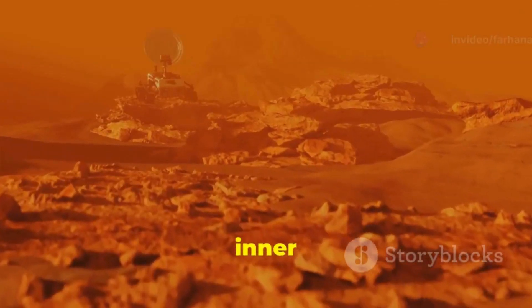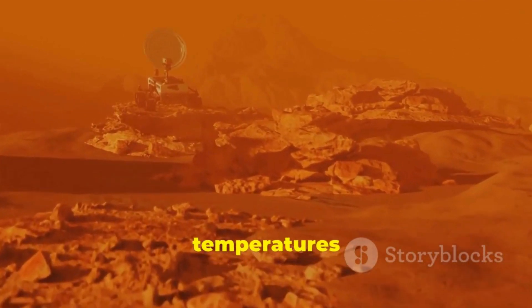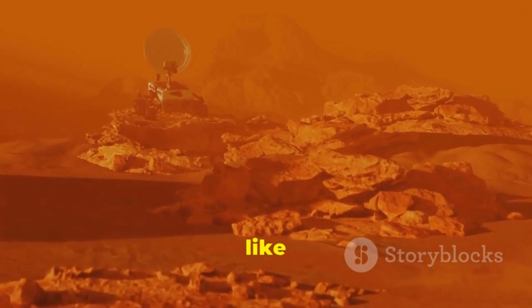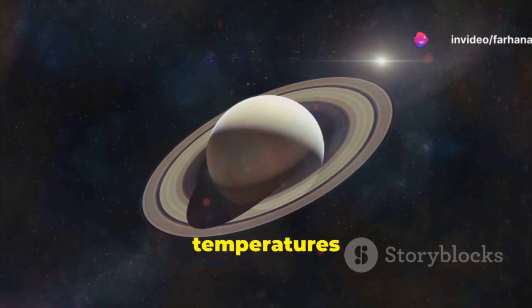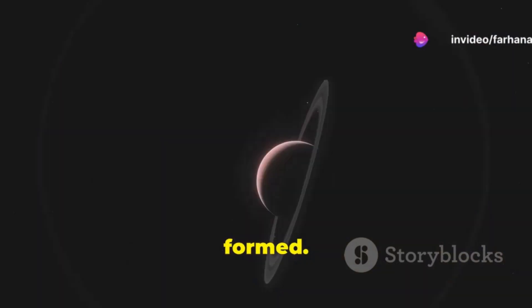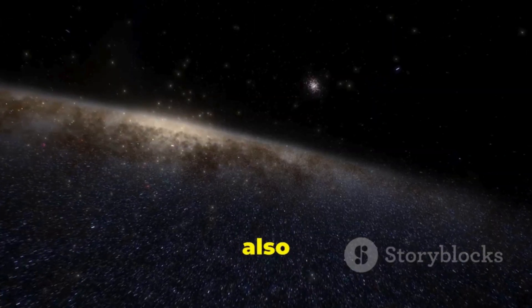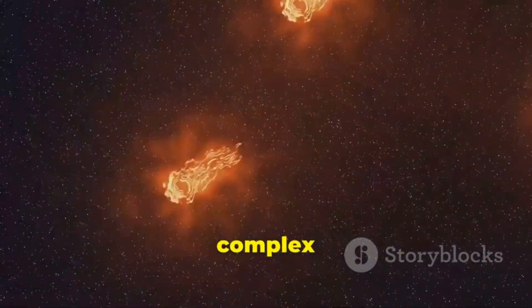They continue to collide and grow, eventually becoming planets. In the inner solar system, where temperatures are higher, rocky planets like Earth and Mars formed. In the outer solar system, where temperatures are colder, gas giants like Jupiter and Saturn formed. These planets have massive atmospheres of hydrogen and helium. They also have rings of ice and dust particles.